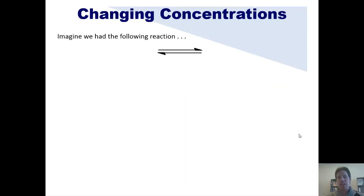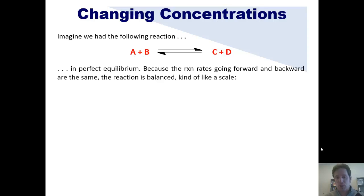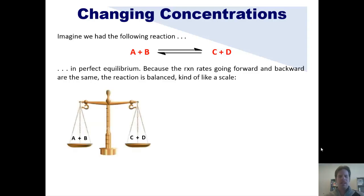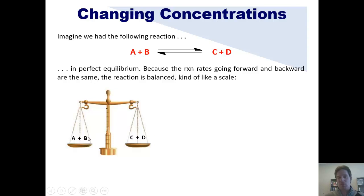First, we'll begin by looking at changes in concentration. I want you to imagine that we had this reaction sitting at perfect equilibrium. Because the reaction rate going forward and backward are the same at equilibrium, the reaction could be said to be balanced — kind of like a scale. Remember what I said in an earlier video: when a reaction is at equilibrium, that does not necessarily mean that the amounts of reactants and products are the same. It just means that the rate of going from left to right is the same as the rate going from right to left.